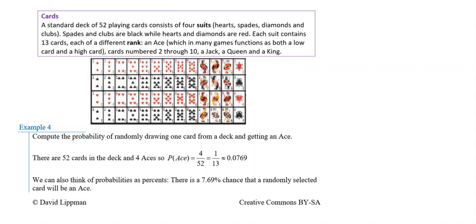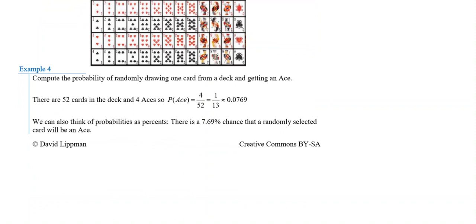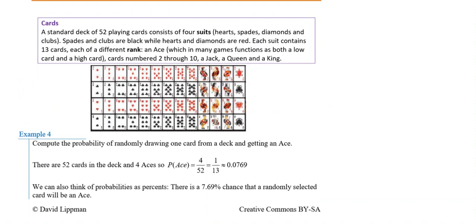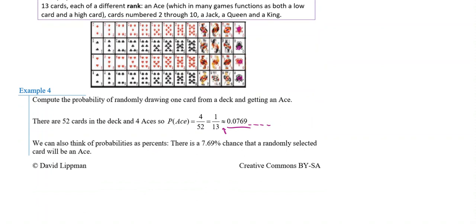Compute the probability of randomly drawing one card from a deck and getting an ace. There are four aces in a deck, so: probability of getting an ace equals 4 over 52. Dividing top and bottom by four gives us 1 over 13. As a decimal, that's approximately 0.0769 — the 'approximately' is because we rounded the remaining digits.